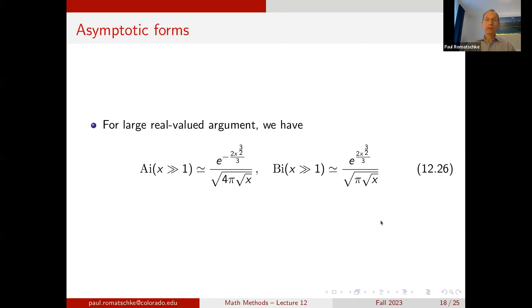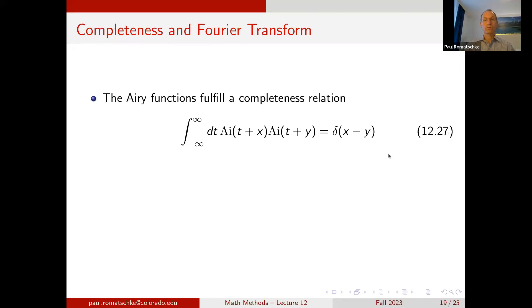For real-valued arguments, the Airy functions have the following asymptotic forms: Ai for large x is essentially an exponentially decreasing function, going as e^{−x^{3/2}}, and Bi is an exponentially growing function going like √x e^{x^{3/2}}. The Airy functions also fulfill a completeness relation such that the integral over dt of Ai(t+x) Ai(t+y) equals δ(x−y).